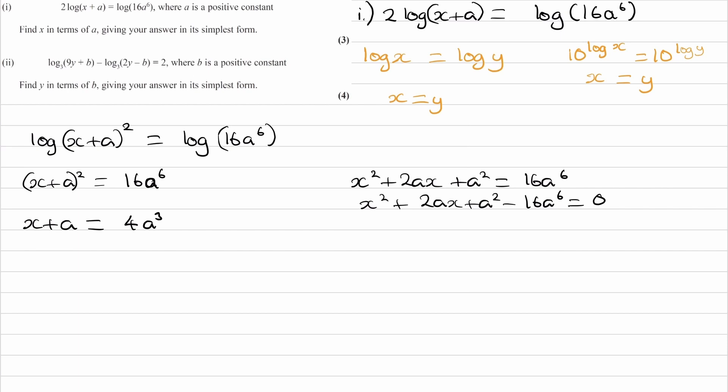And then because we're square rooting, we would get a plus or minus as well. Now this is what we need to think about. Are we going to consider just the positive solution or the negative solution, or could it be either one? So we look back to the question to see what information we're given.